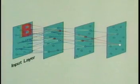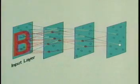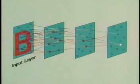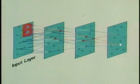Even if pattern B is shifted in position or deformed in shape, the same cell in the deepest layer responds. In other words, the neocognitron recognizes the shape of the pattern independently of its size and position.